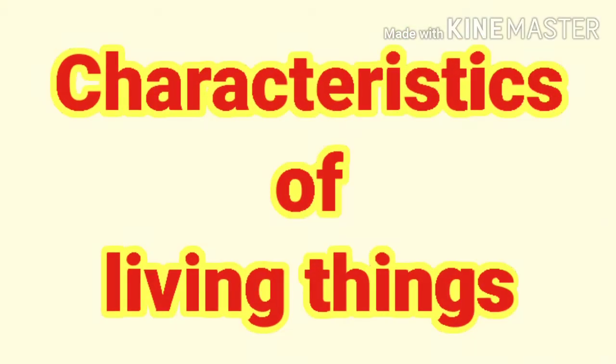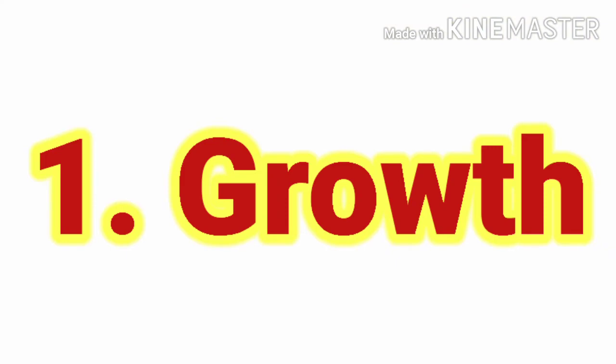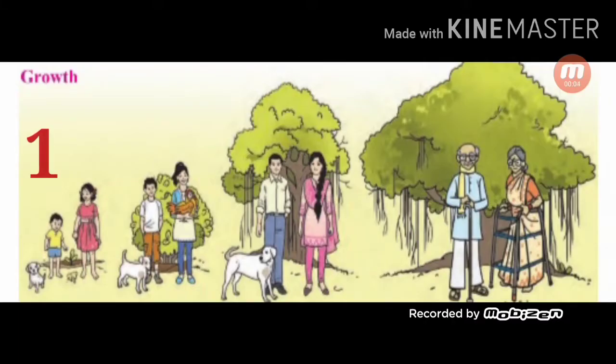Characteristics of living things. The first is growth. In the first picture, you can see a chicken, a puppy, a sapling, a young boy and a young girl. In the second picture, we can see that the chicken has turned into a hen, the puppy has turned into a young dog, the sapling has turned into a bush, and the children have turned into elder children.